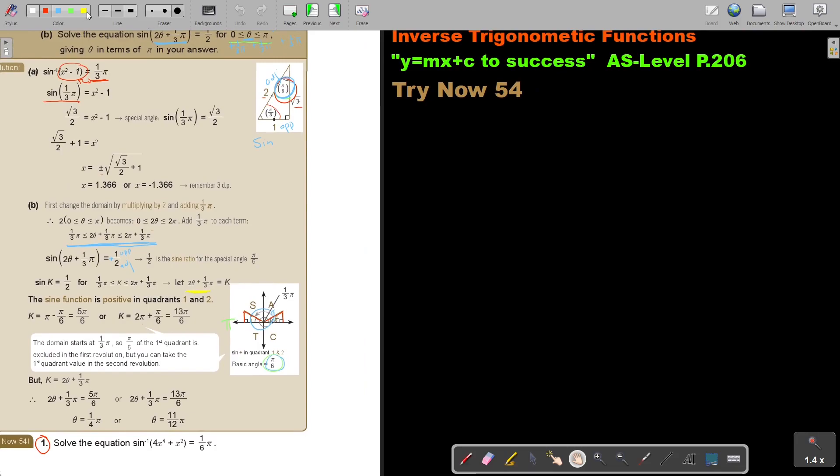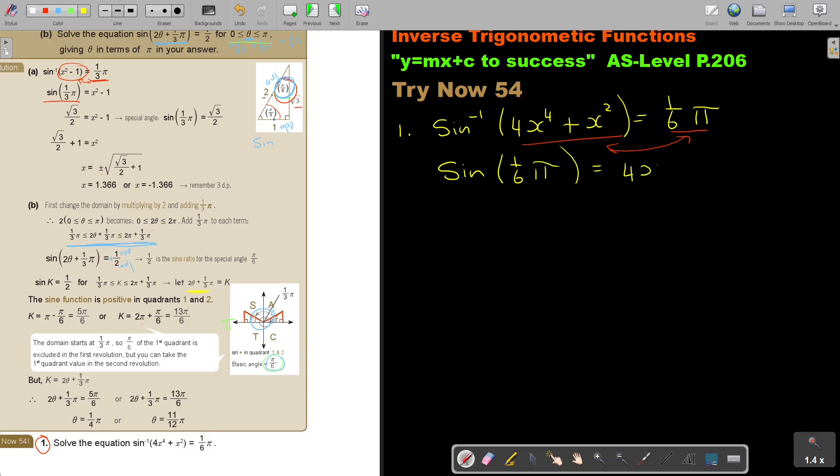Let's start with number 1. They say sin inverse, and they say 4x to the 4th plus x squared equals 1 over 6 pi. I want to show you what we did in this question A. You can rewrite it as sin, and then you basically swap these two, and then you don't write the inverse. So it's sin of 1 over 6 pi equals 4x to the 4th plus x squared. This is a special triangle.